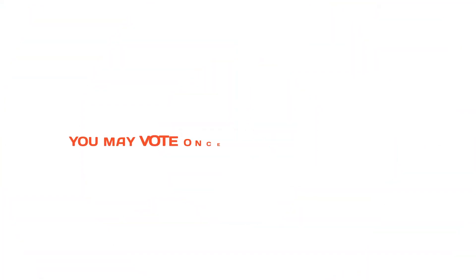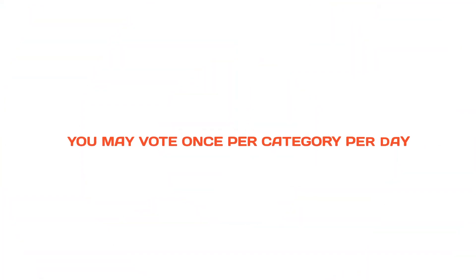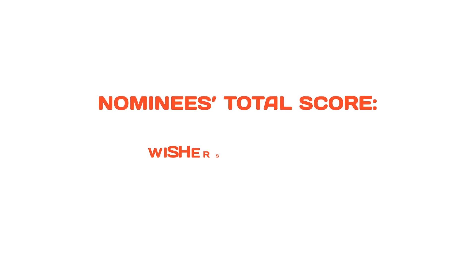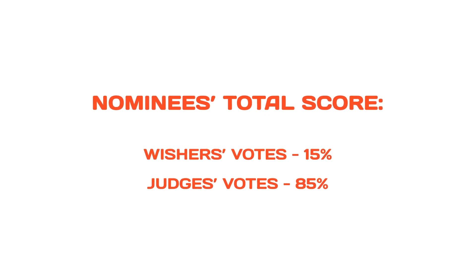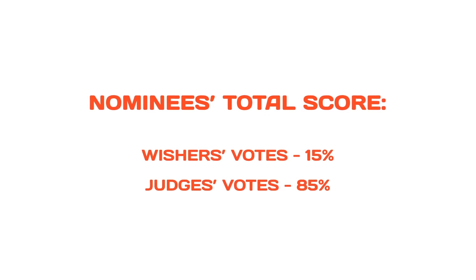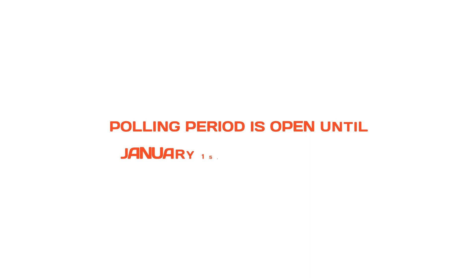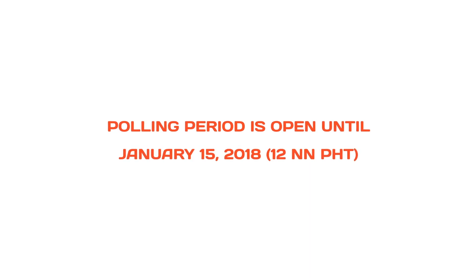You may vote only once per category per day. A nominee's total score is composed of WISHers' votes at 15% and judges' votes at 85%. The polling period is open until January 15, 2018, 12 noon.